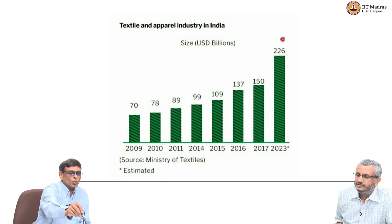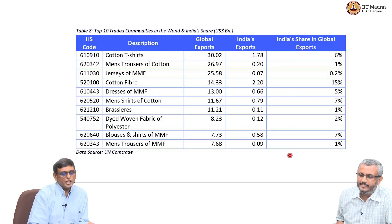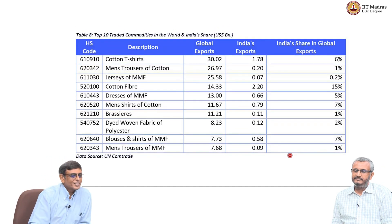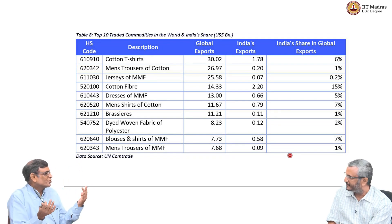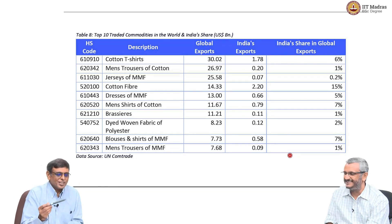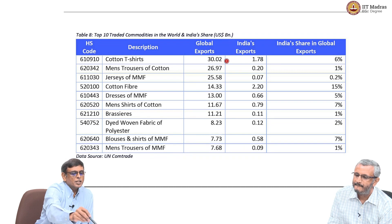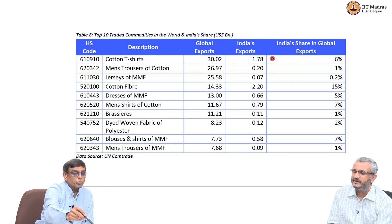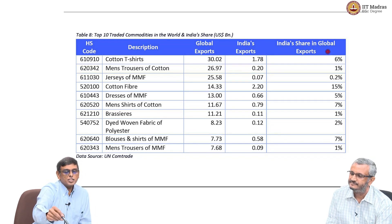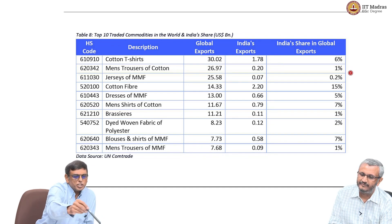Indian apparel industry is expected to be about 226 billion dollars in 2023. This next chart looks at what customers are buying versus what India is selling — checking for strategic fit, demand and supply match or mismatch. Cotton t-shirts are a 30 billion dollar global export industry; India represents 6 percent of global exports there. Men's trousers of cotton are 26 billion dollars, with India at about 1 percent. Jerseys of MMF — man-made fiber like rayon and polyester — are 25.58 billion dollars, but India is only 0.2 percent there. We are not competitive.